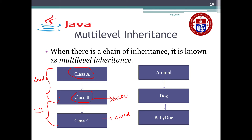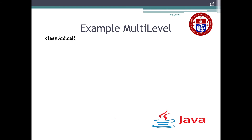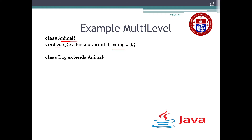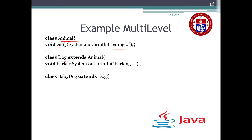The same example I'm going to explain in code. Here class Animal is the base class with method eat printing 'eating'. Then I create child class Dog — extends Animal — with method bark printing 'barking'. Again I create one more class BabyDog as a child class of Dog — so Dog is the parent class — with method weep printing 'weeping'.